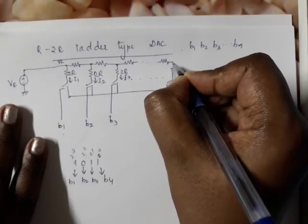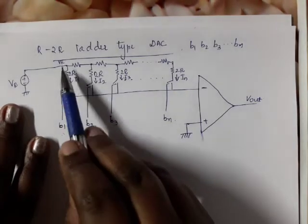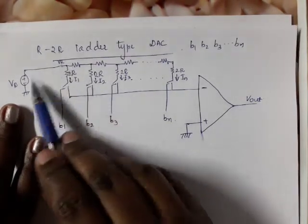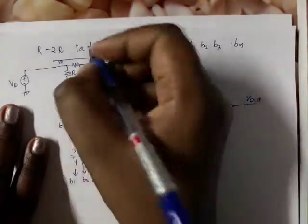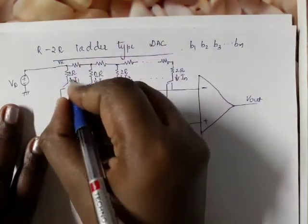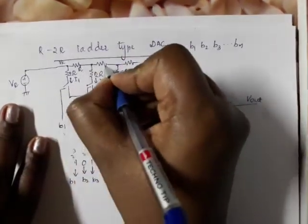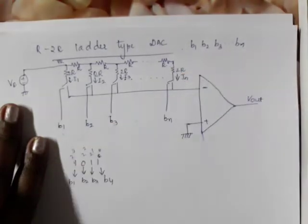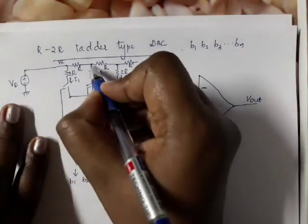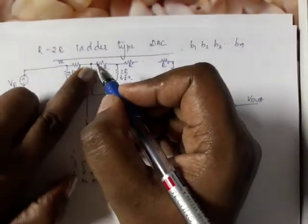Looking at the voltage at each node using the R and 2R resistor combination: the voltage here comes from VR, and we have an R to 2R combination at each node forming a voltage divider ladder network.